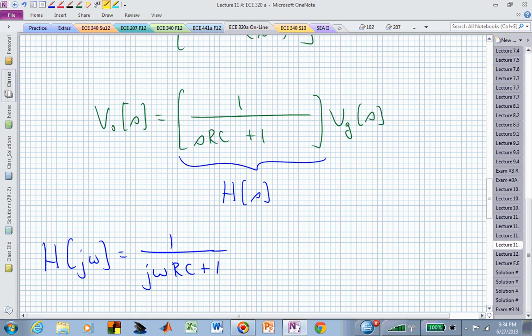In order to evaluate these expressions, we are going to need the frequency content, or how does this system pass the frequency content that we're pushing through it. And for that reason, we can find H of J omega by replacing S everywhere in our transfer function with J omega.